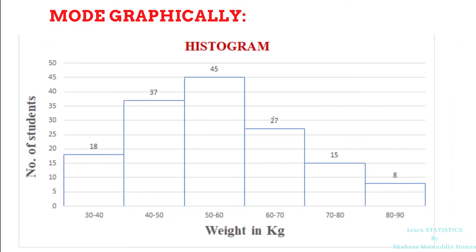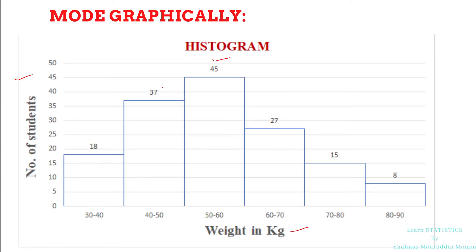Let us see the histogram, which we have drawn by taking weight in kilograms along the x-axis and number of students along the y-axis. By carefully observing the histogram, we search for the rectangle with maximum height, which is equal to 45. Now our actual procedure starts. After identifying the rectangle with maximum height, connect the right-hand top corner of that rectangle with the right-hand top corner of the previous rectangle, which has height 37.